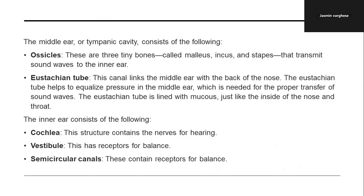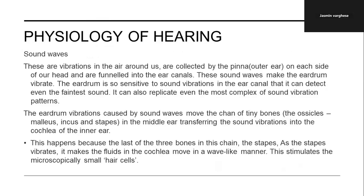Now we will see the physiology of hearing. Sound waves — vibrations in the air around us — are collected by the pinna on each side of the head and funneled into the ear canal. These sound waves make the eardrum vibrate. The eardrum is so sensitive it can detect even the faintest sound and replicate the most complex vibration patterns. The eardrum's vibration moves the chain of tiny bones — malleus, incus and stapes — in the middle ear, transferring the sound vibration into the cochlea of the inner ear. The stapes vibrates and makes the fluid in the cochlea move in a wave-like manner.